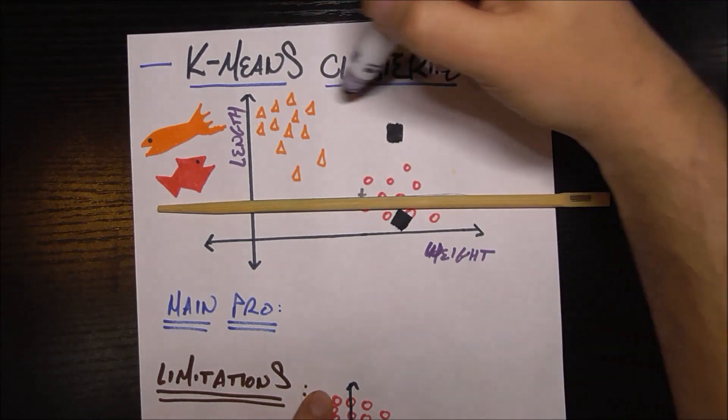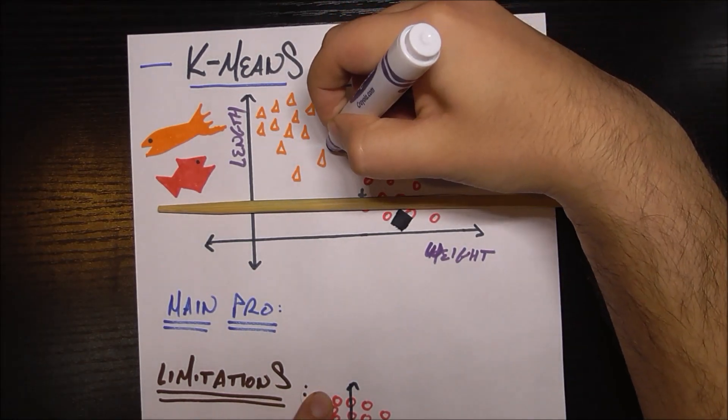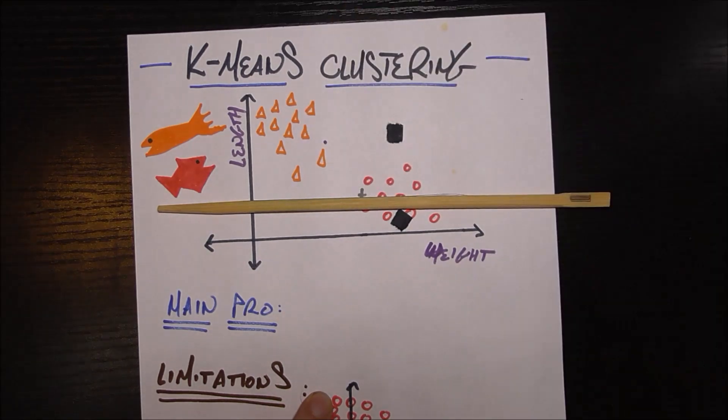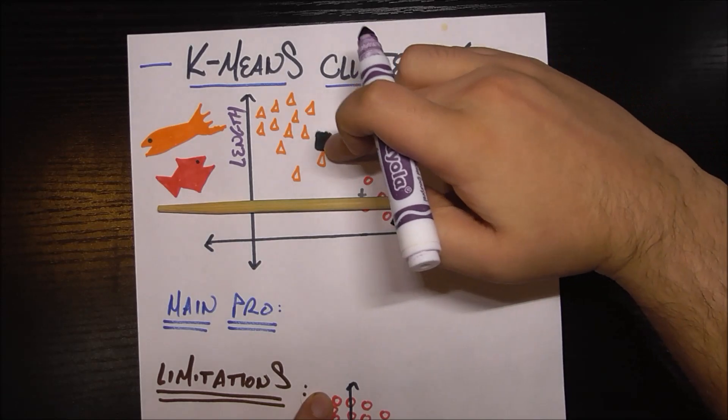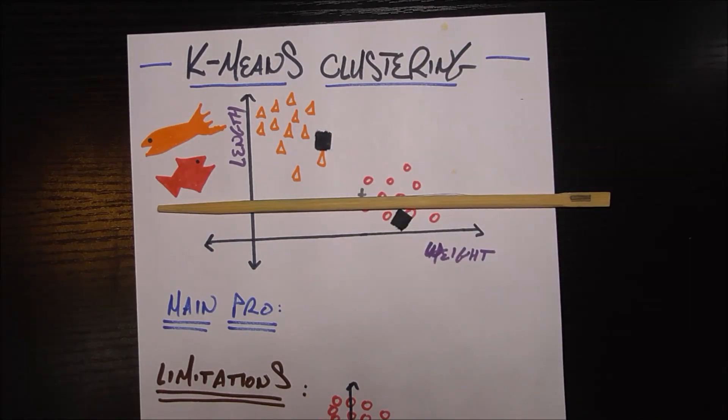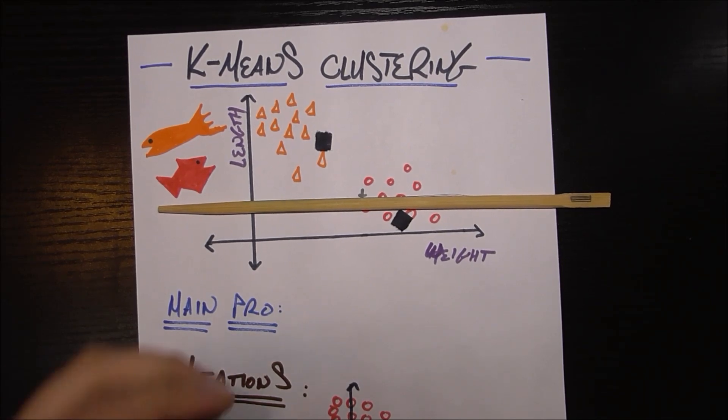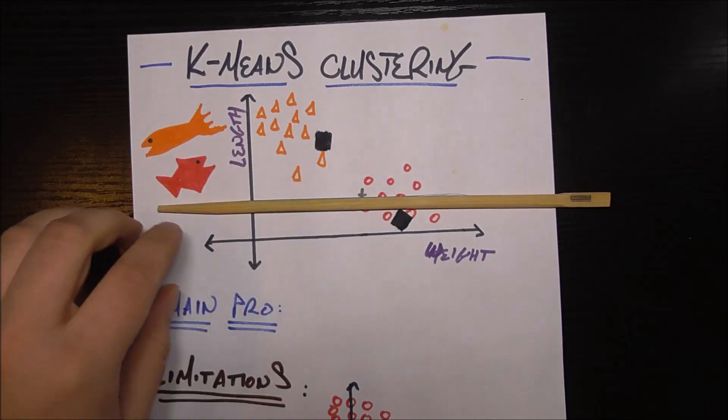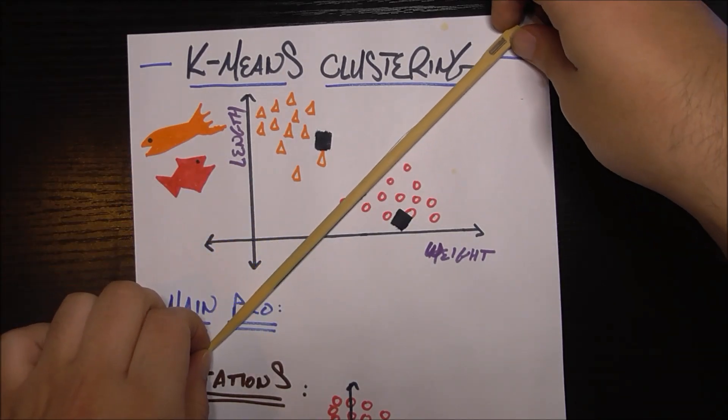Now the same thing happens with these points. We see that there's more salmon, so it's going to be pulled in that direction. Let's just say the average value is something like there. So this mean right here moves to its new value. And the algorithm basically just reinitializes. It reclassifies all the points in our space to now see if it's closer to this mean or this mean. And what that does effectively is shifts our line so that it is now this line.